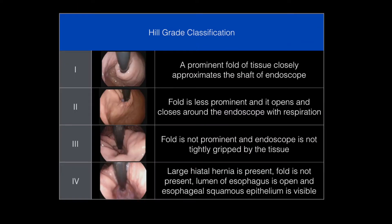Hill-grade classification is frequently used in preoperative assessment of GERD patients considering anti-reflux surgery and is a helpful guide to clinicians performing anti-reflux procedures by providing a standardized description of the hiatal hernia and gastroesophageal junction anatomy.